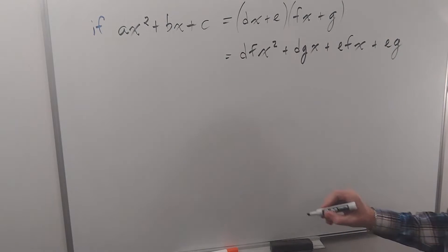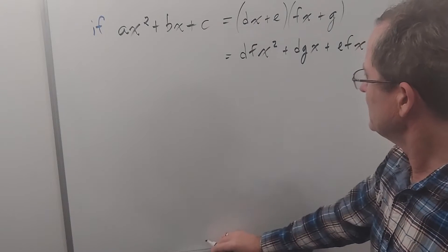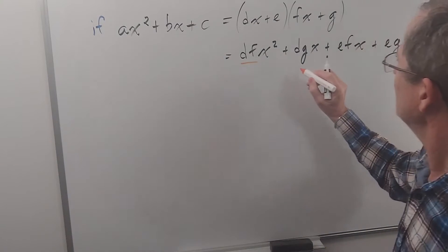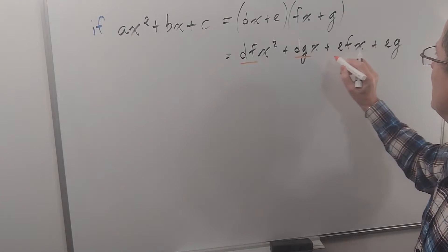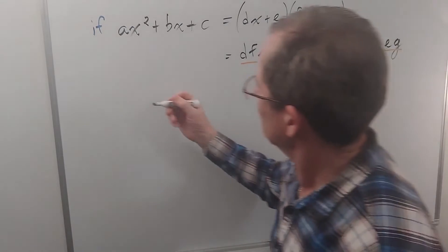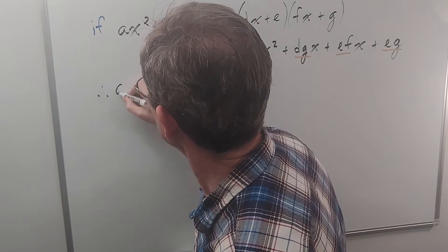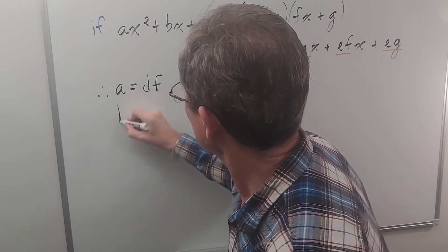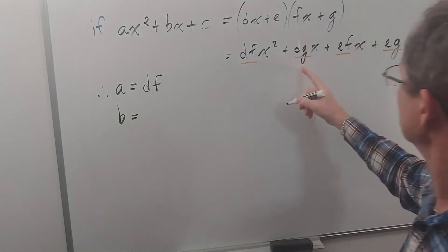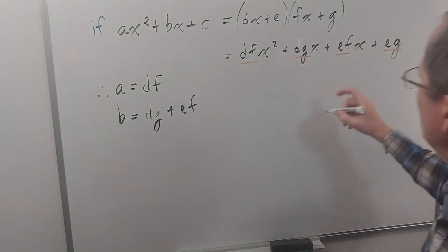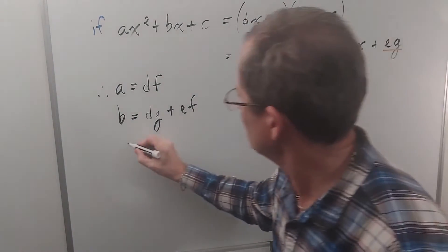So by comparison we can see that a is df, b is dg plus ef, and c is eg. Let's write that down. Therefore a equals df, b equals dg plus ef, and c equals eg.